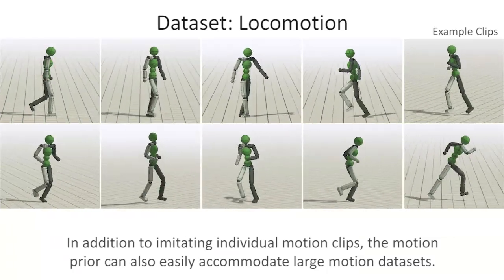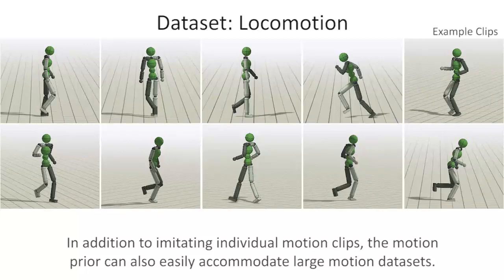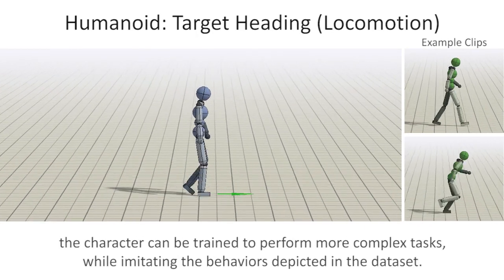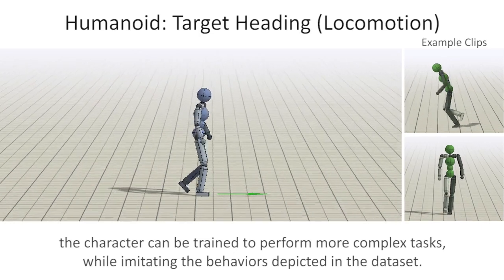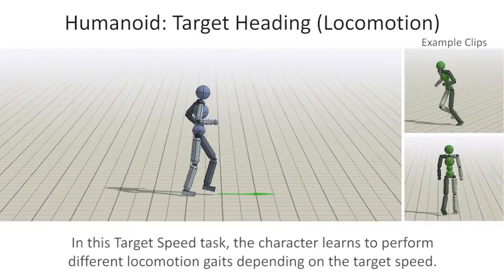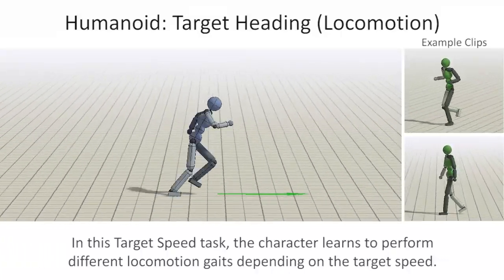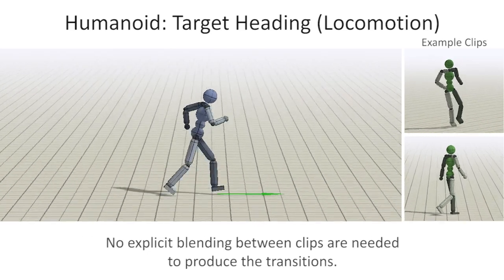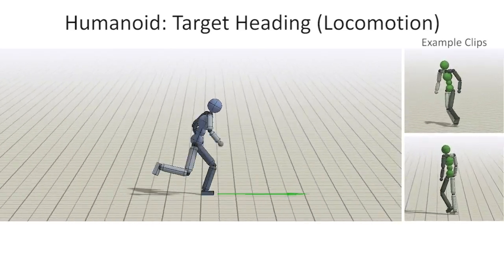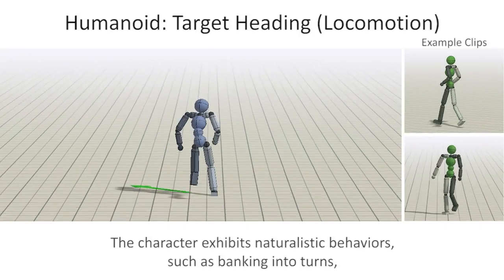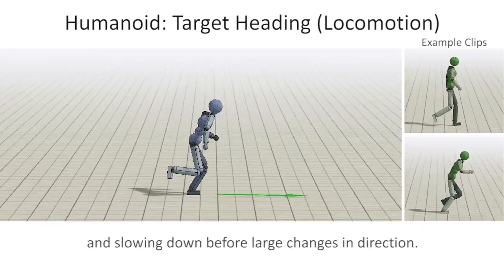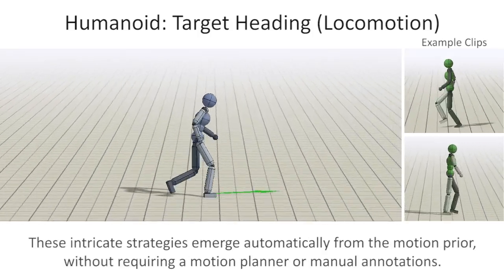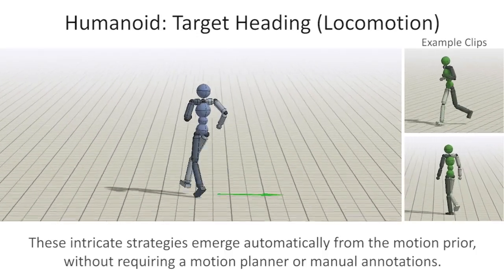In addition to imitating individual motion clips, the motion prior can also easily accommodate large motion data sets. By combining the motion prior with additional task objectives, the character can be trained to perform more complex tasks while imitating the behaviors depicted in the data set. In this target speed task, the character learns to perform different locomotion gaits depending on the target speed. Transitions between different gaits emerge automatically — no explicit blending between clips is needed. The character exhibits naturalistic behaviors such as banking into turns and slowing down before large changes in direction. These intricate strategies emerge automatically from the motion prior, without requiring a motion planner or manual annotations.